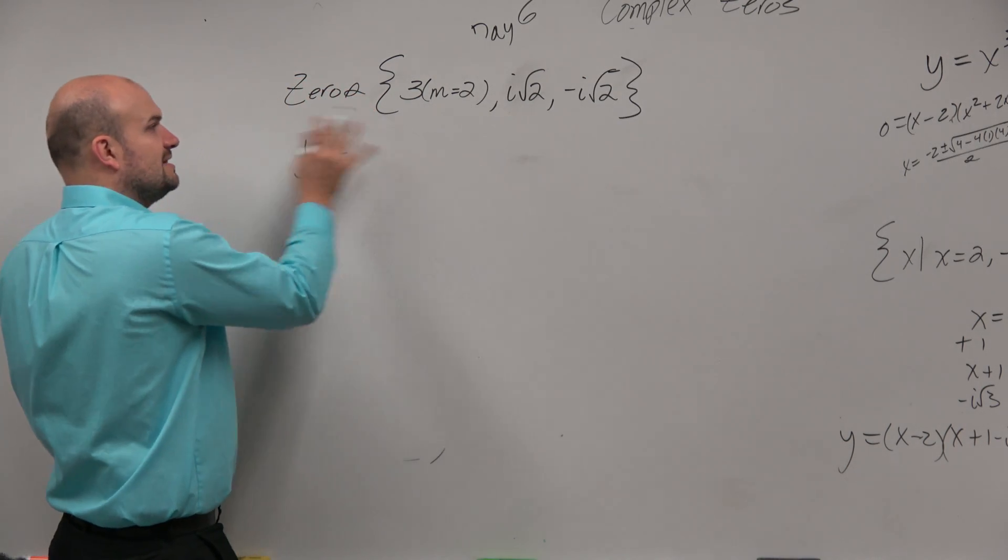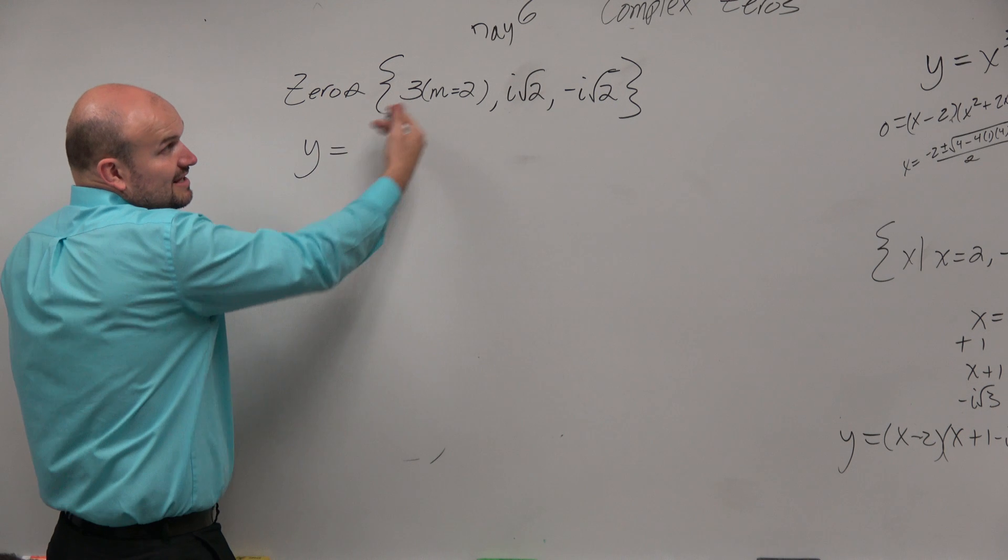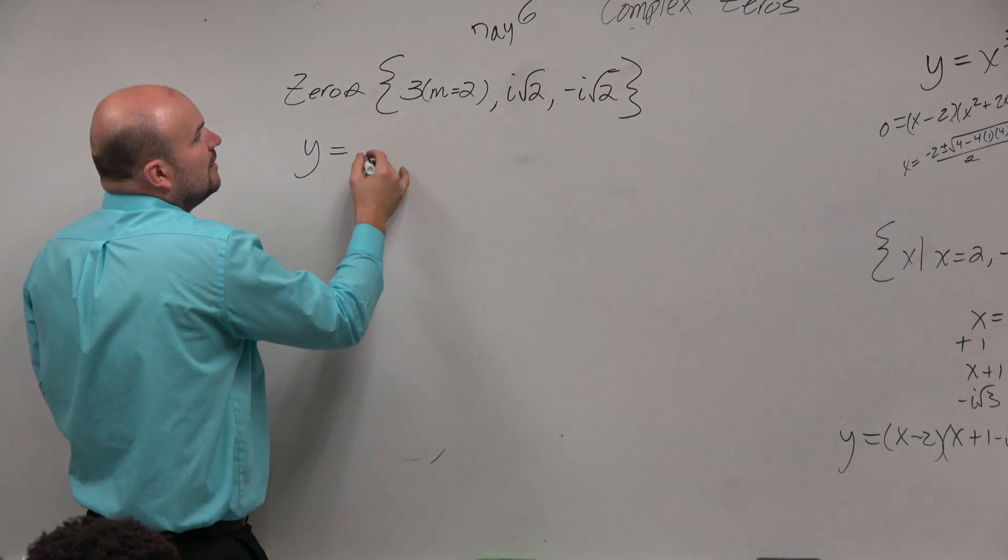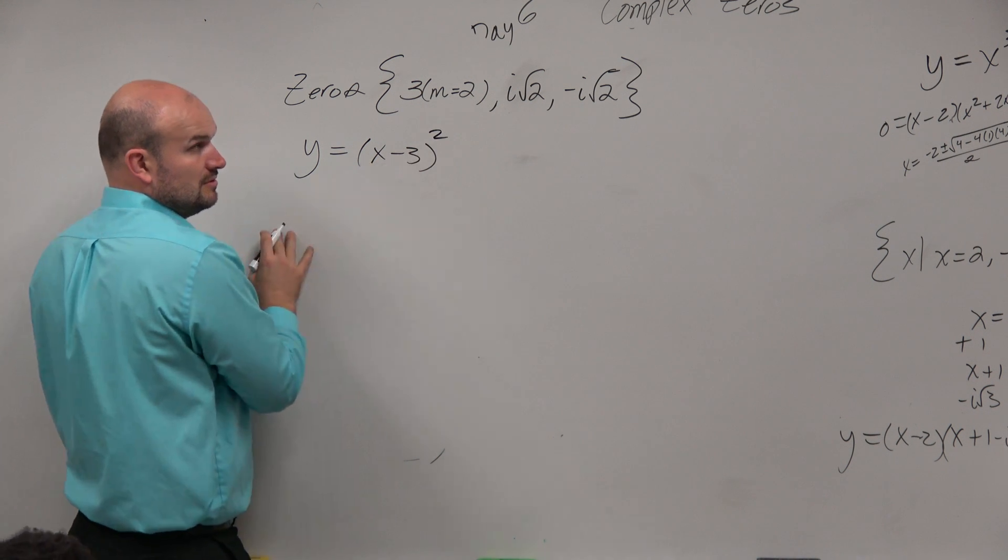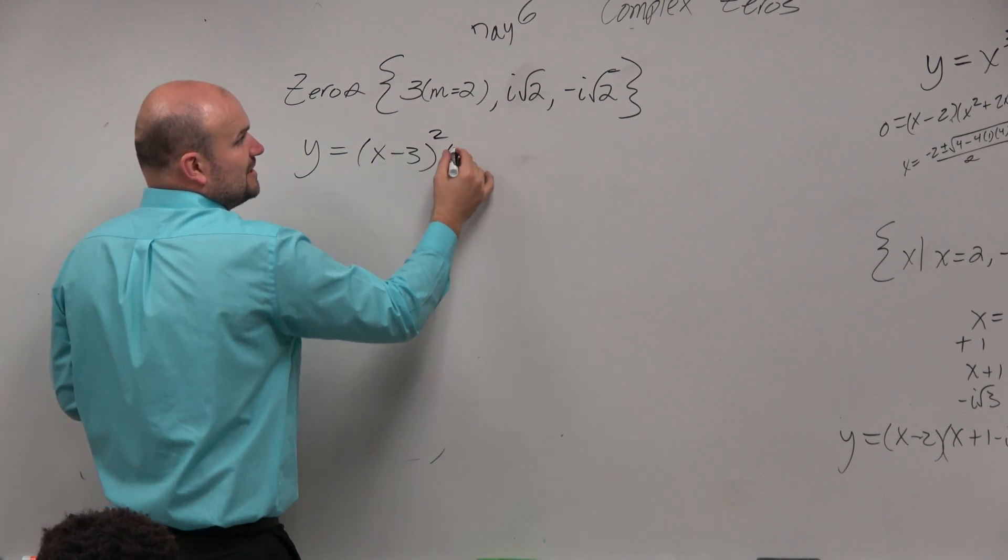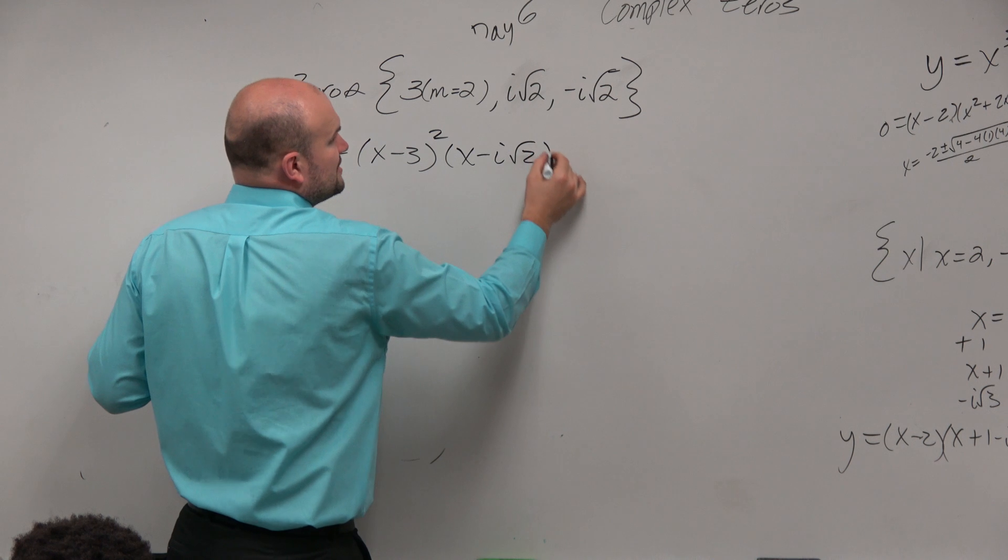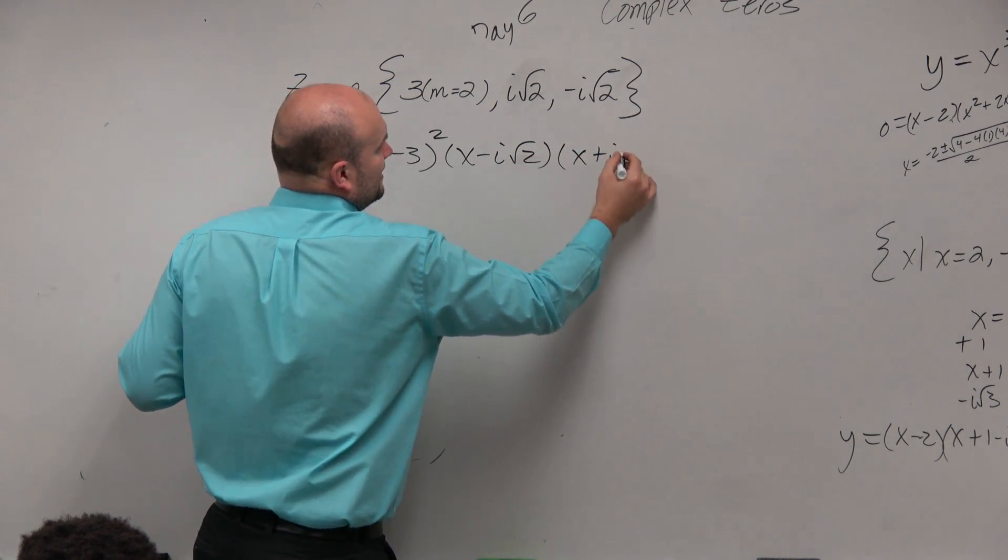When given the zeros, write them as their factors. Write these as linear factorization. OK, that's x minus 3, multiplicity of 2. And then this is just going to be x minus i square root of 2, x plus i square root of 2.